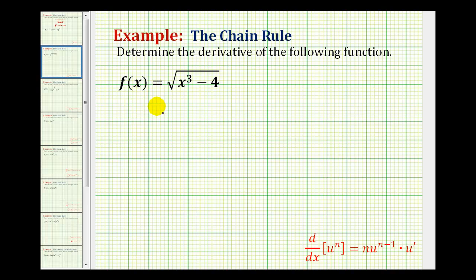To determine the derivative of f(x) = √(x³ - 4), we need to recognize this as a composite function, where there's an inner function and an outer function, and therefore we'll have to apply the chain rule.